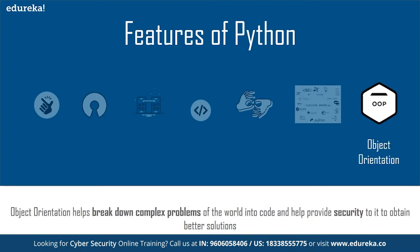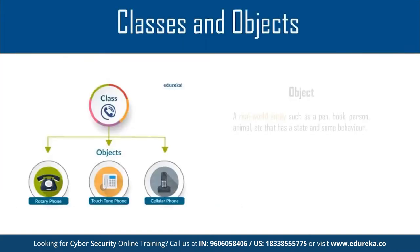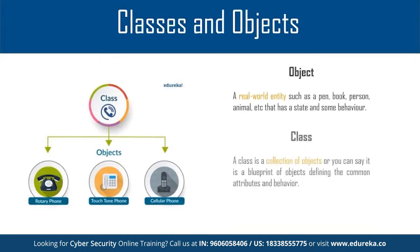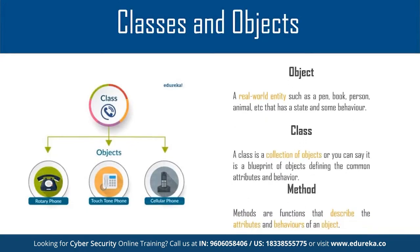The object-oriented paradigm helps break down real-world problems and provides security for better solutions. Because of OOP, let's briefly touch on what classes and objects are. A class is basically a superset; an object is a subset. For instance, a phone — it could be a rotary phone, a touch phone, or a cellular phone. An object is an instance of the class, such as a mobile handset, which has a state and some behavior.